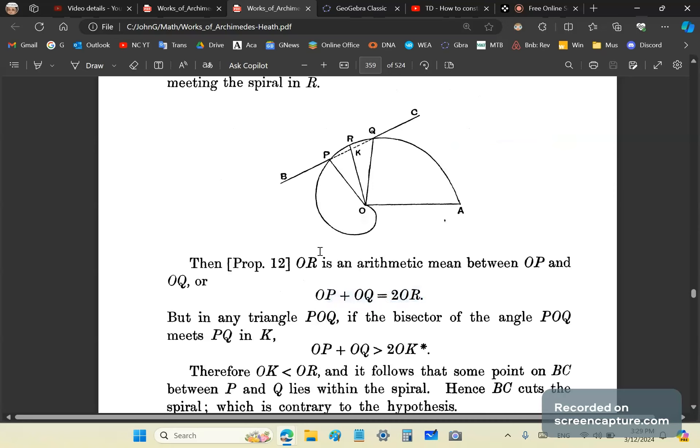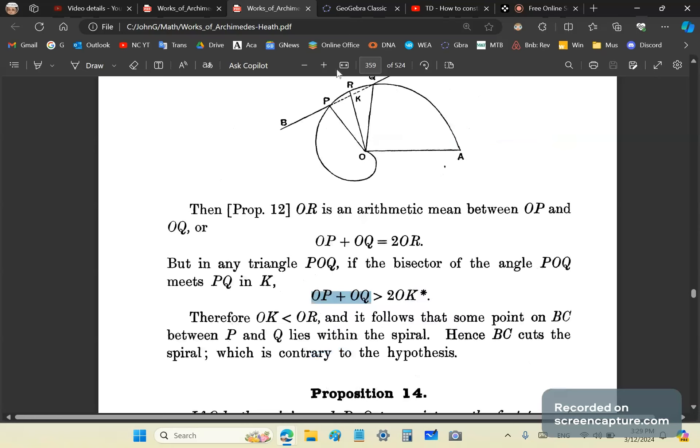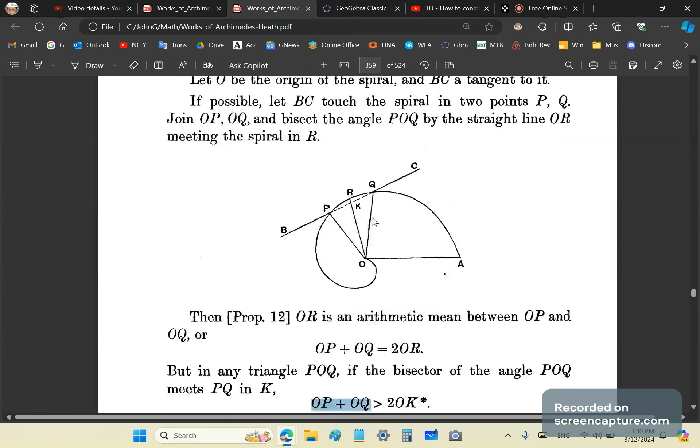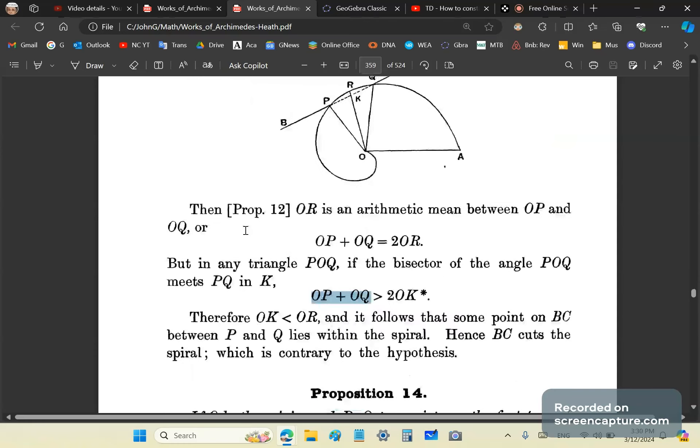I'll give you the answer in a moment but just let me finish with this. In any triangle POQ, if the bisector of the angle POQ meets PQ in K, then OP plus OQ is greater than 2OK. Therefore OQ is less than R, and it follows that at some point on BC between P and Q, we have K lying on this side of the spiral, inside it, not to this side of R. Hence BC cuts the spiral. But we assumed that BC doesn't cut the spiral. We assumed it's a tangent line.